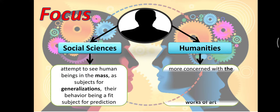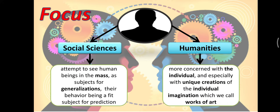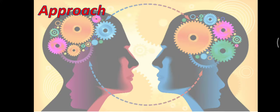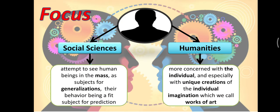While in humanities, it is more concerned with the individual. That is the major difference between social sciences and humanities. Remember, more concerned with the individual and especially with unique creations of the individual imagination which we call works of art.